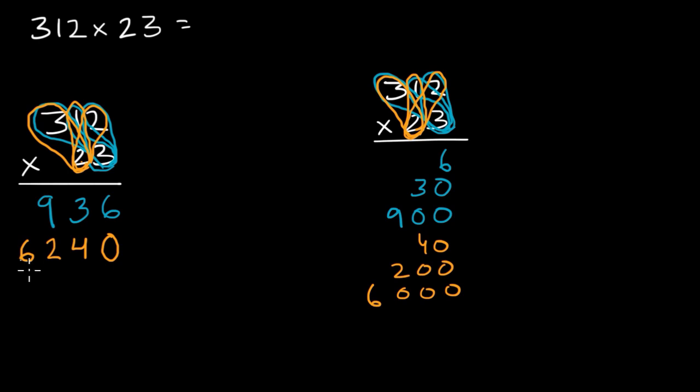But then, in either case, I just want to add up all the partial products. On the standard technique, 6 plus 0 is 6. 3 plus 4 is 7. 9 plus 2 is 11. I regroup one of those ones. 1 plus 6 is 7. I get 7,176.